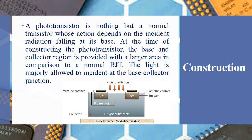Moving on to the construction of the phototransistor: the phototransistor is a normal transistor whose action depends on incident radiation which falls on its base. At the time of constructing the phototransistor, the base and collector region is provided with a large area in comparison to a normal BJT. The light is majorly allowed to be incident at the base-collector junction. When light falls on the base-collector junction, the phototransistor will conduct.